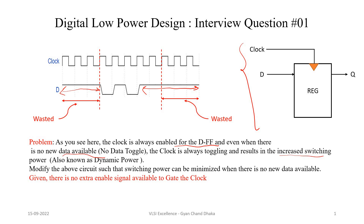The clock is always toggling and it results in increased switching power, also called dynamic power. The question is: modify the above circuit such that the switching power can be minimized when there is no new data available. We have to make sure that the clock signal applied to the flip-flop does not toggle when input data is constant, reducing switching activity and hence dynamic power.